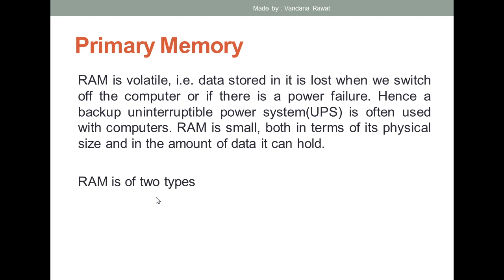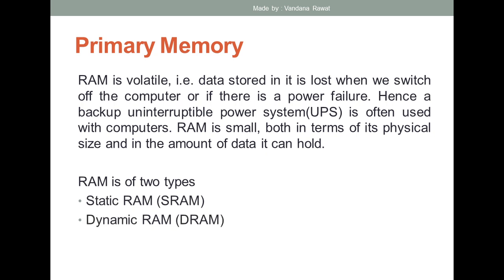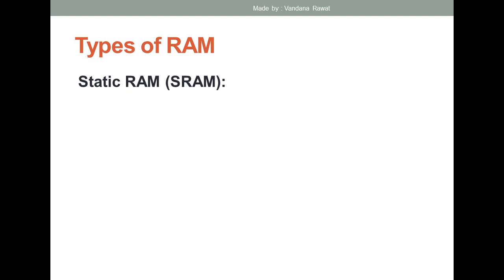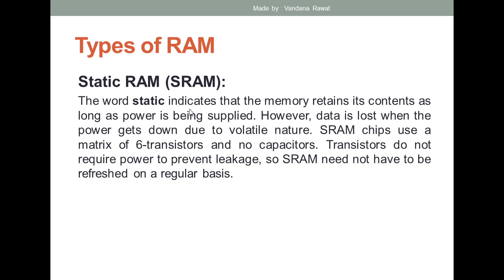There are two types of RAM: the first one is SRAM — Static RAM — and the second one is DRAM — Dynamic RAM. The word 'static' indicates that the memory retains its contents as long as power is being supplied. However, data is lost when power goes down due to its volatile nature. SRAM chips use a matrix of six transistors without any capacitor, which is why data stored in SRAM can be saved for a longer time and you do not need to refresh the memory again and again.